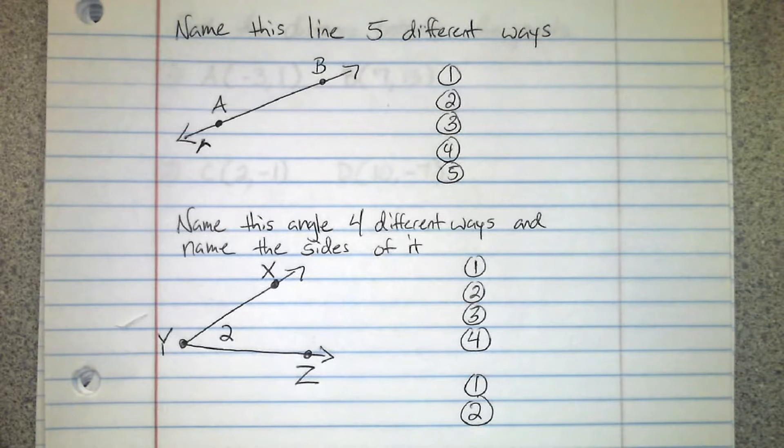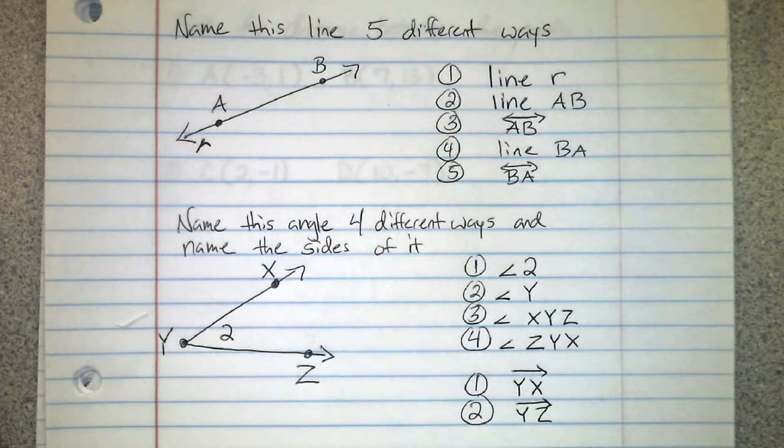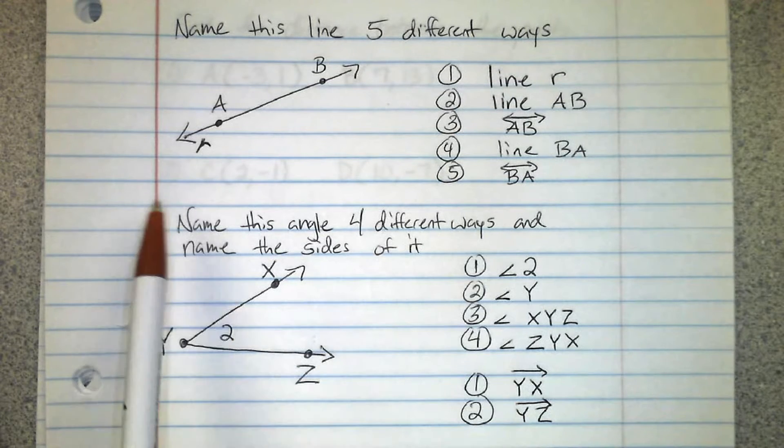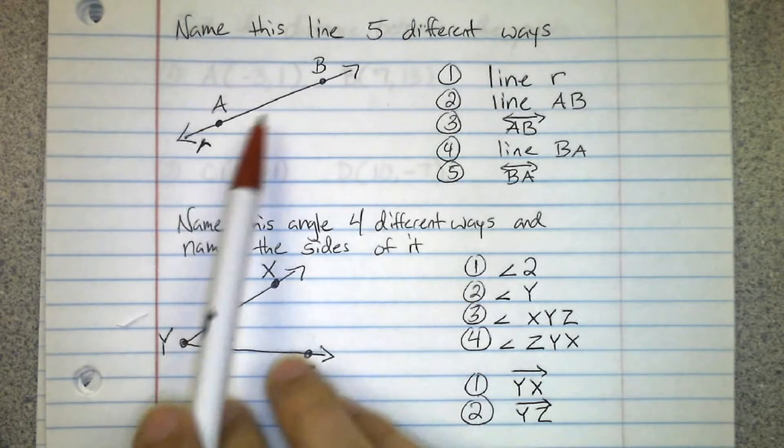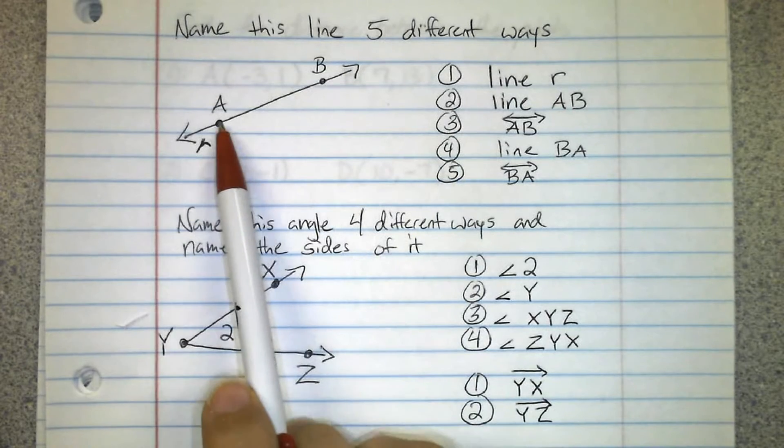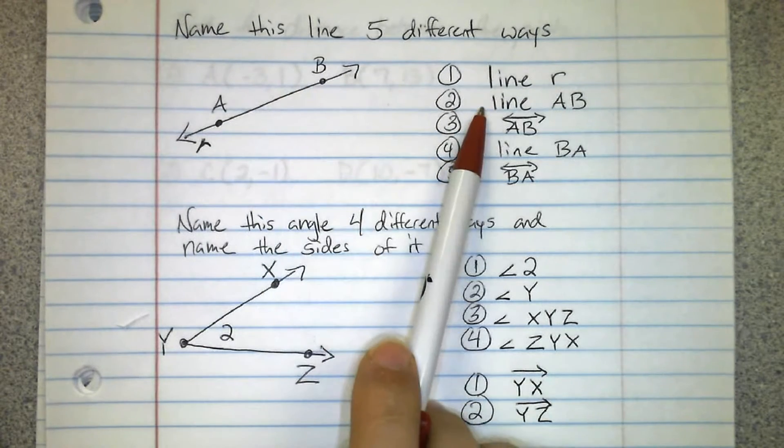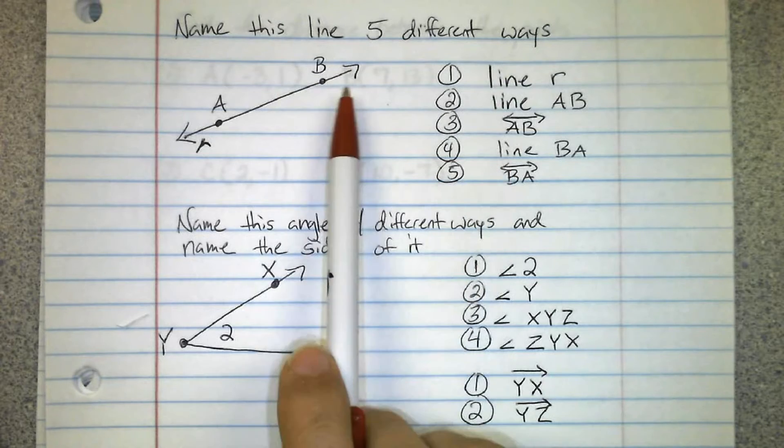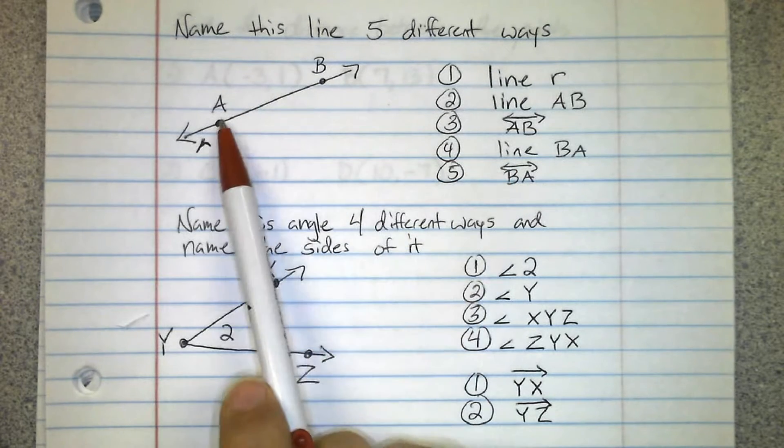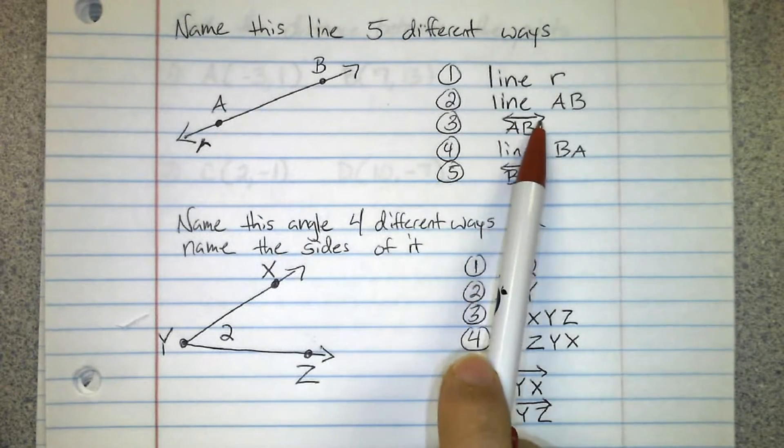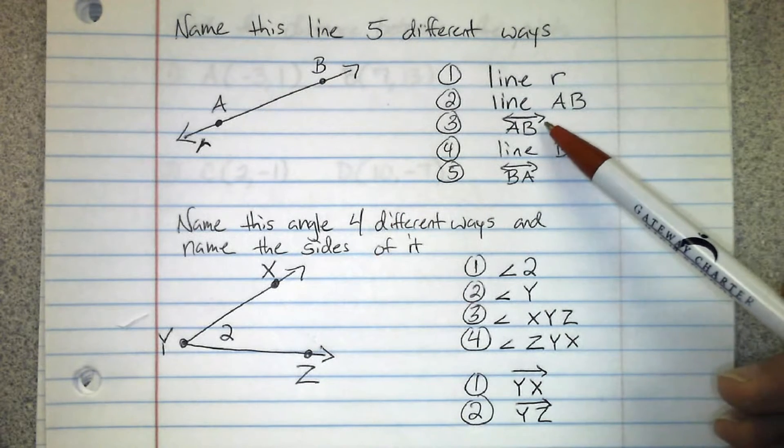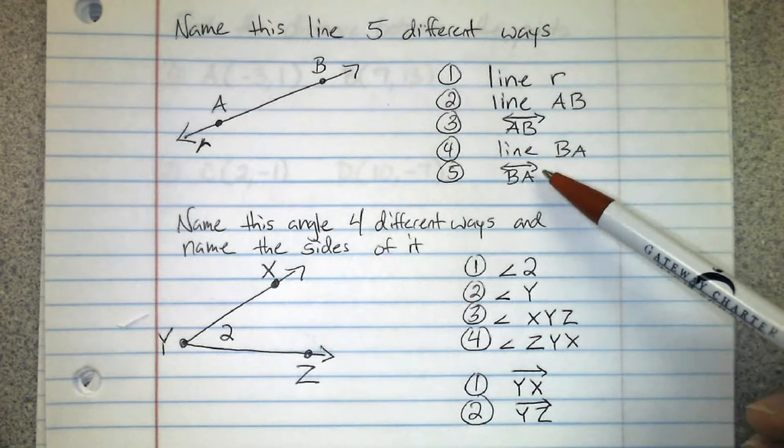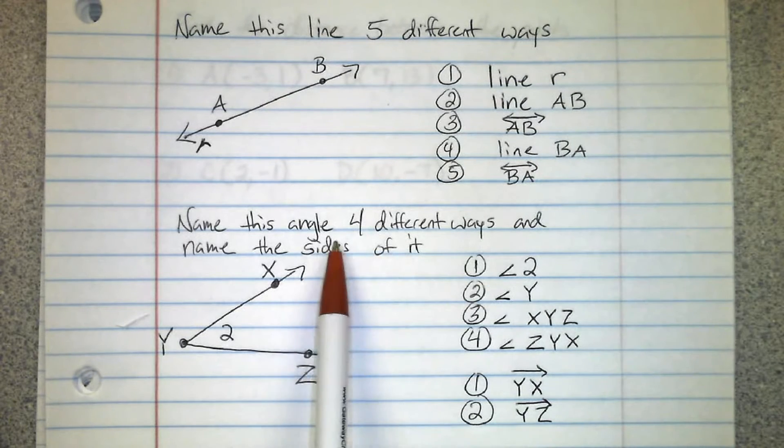Alrighty, here we go. Now first we can name a line by the script lowercase letter that names it, line R. We can name it by the points, line AB. We can do that in reverse, line BA. We can also use the notation writing the two points with a picture of a line above it. Make sure you have arrows on both ends. If an arrow is just on one end it's a ray, if there's no arrows it's a segment. So we have line AB, line BA.